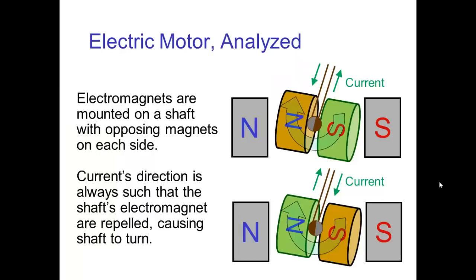So, the way this simple motor works is at one point the central electromagnets are set up so that the North Pole is next to the North Pole on one side and there's a South Pole next to the South Pole and so, of course, they repel each other and the central shaft turns.